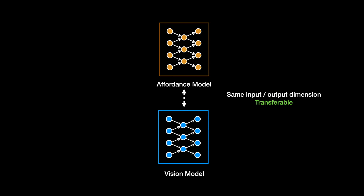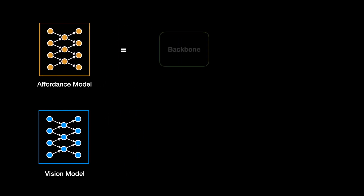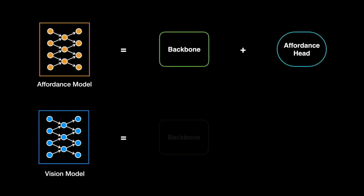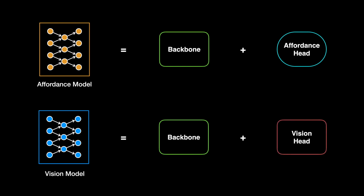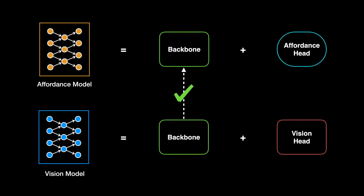Both the affordance and vision model can be decomposed into two components. The first component is the shared architecture in both models, also called backbone. The second component is the task-specific layers, also called hat. In transfer learning, the common practice is to transfer the parameters of the backbone, while the hat is randomly initialized because it is task-specific.